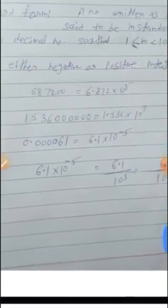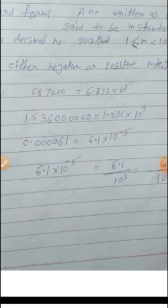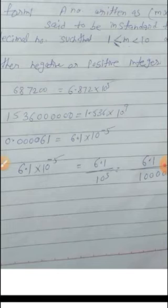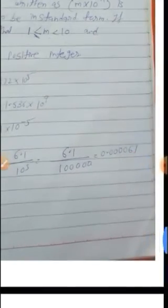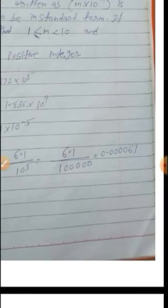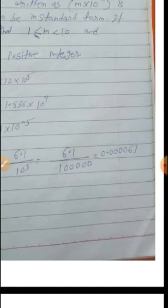Same type of question: if 6.1 × 10^(−5) is given, write it in usual form. Since the power is negative, write it in the denominator as 6.1 / 10^5. Now shift the decimal 5 places to the left: count 1, 2, 3, 4, 5. The number is 0.000061.